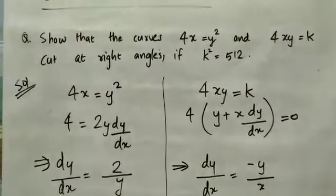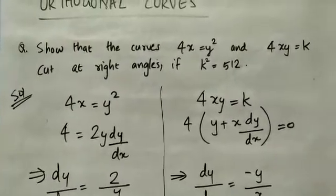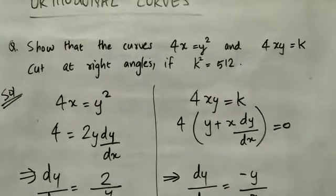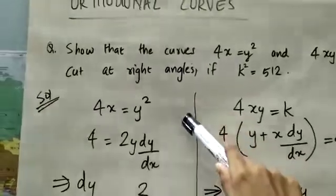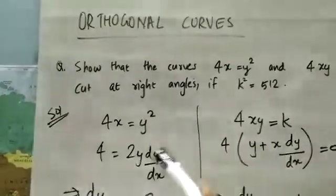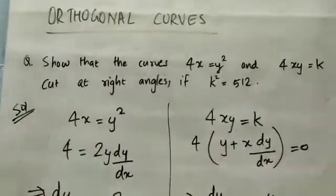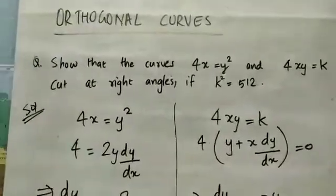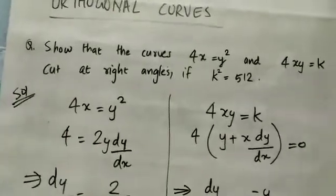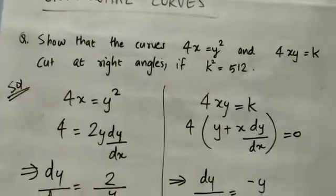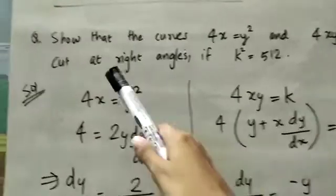Show that the curves 4x = y² and 4xy = k cut at right angles. These two curves intersect at a point — the point of contact. We need to show that where the curves intersect, they cut at right angles.